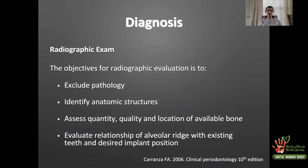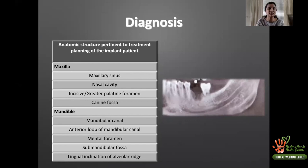Radiographic examination for implant patients serves multiple purposes: to exclude obvious pathology, to identify anatomical structures related to the dental site, to assess the quality, quantity, and location of available bone, and to evaluate the relationship of the alveolar ridge with existing teeth and the desired implant position. In the maxilla, important landmarks include the sinus, nasal cavity, incisive canal, and canine fossa.